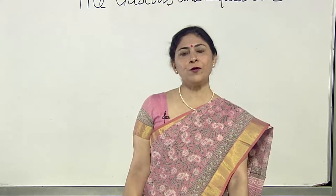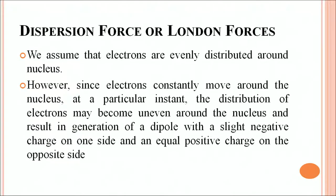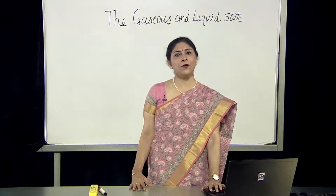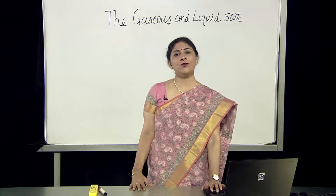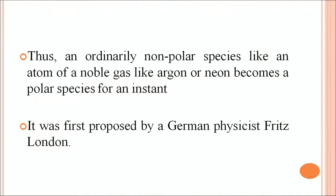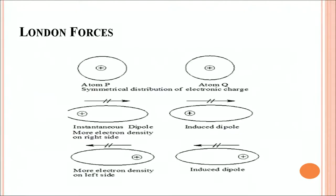Now let's discuss about dispersion forces or London forces. We assume that electrons are evenly distributed around the nucleus. However, since electrons constantly move around the nucleus, at a particular instant the distribution of electrons may become uneven around the nucleus, resulting in the generation of a dipole with a slight negative charge on one side and an equal positive charge on the opposite side. Thus an ordinary non-polar species like an atom or a noble gas like argon or neon becomes a polar species for an instant. This was proposed by German physicist Fritz London, which is why it is named London forces.